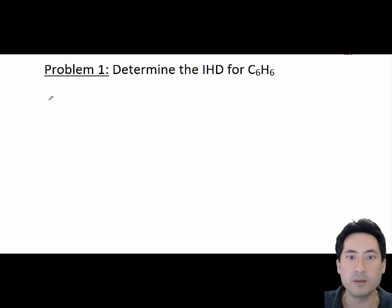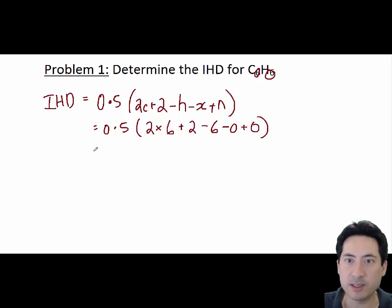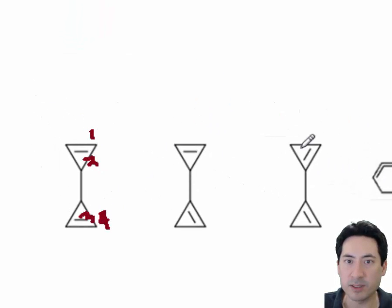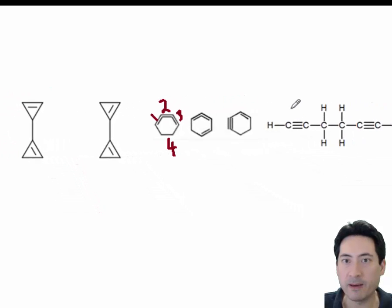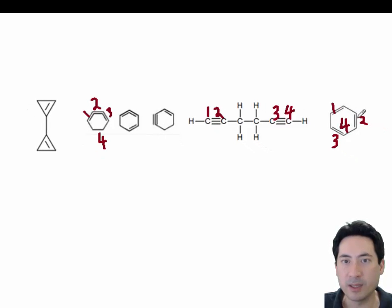Problem one, work out the index of hydrogen deficiency for C6H6. So we write out the formula that we've learnt. So there's the six, the number of carbons is six and the number of hydrogens is six. So we sub those numbers in there. So that works out to eight times 0.5. So the index of hydrogen deficiency is 4. You could be asked to work out which compounds it is. And you can see with all of these, if I count them up, the number, if you count up the number of double bonds and rings, they all add up to four.